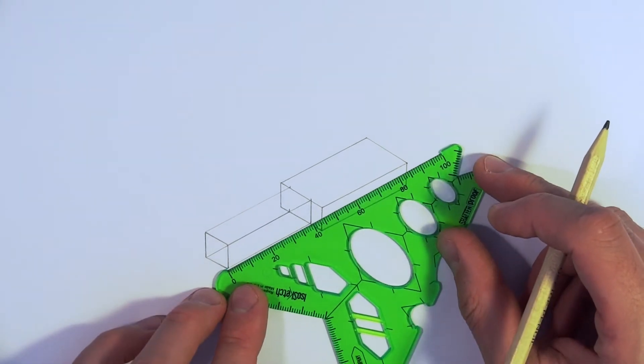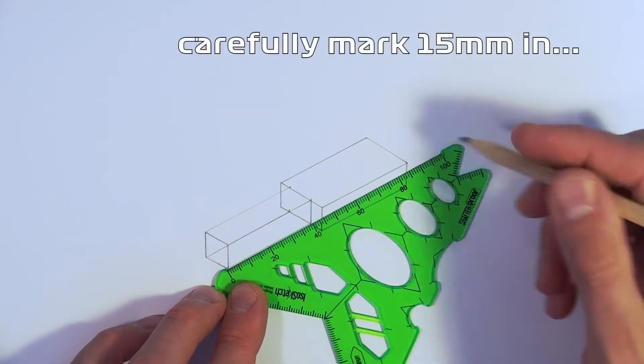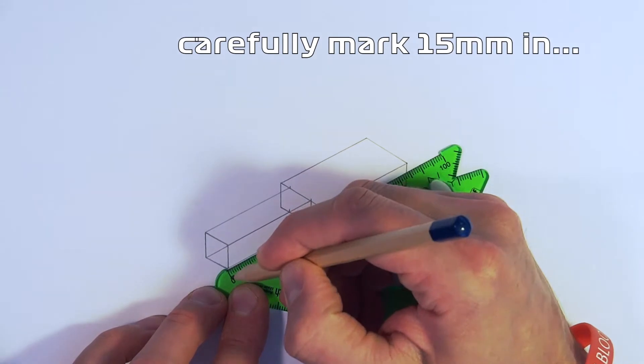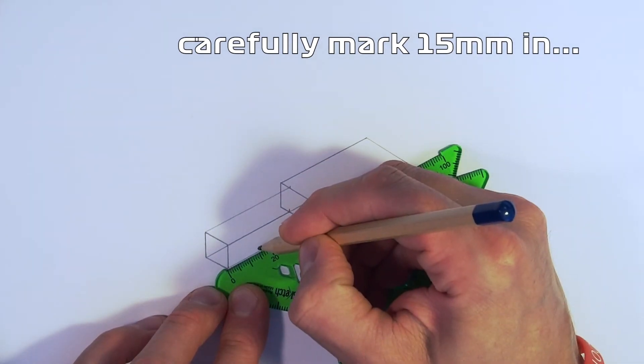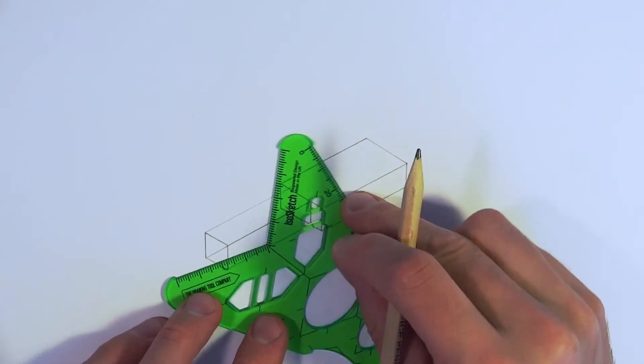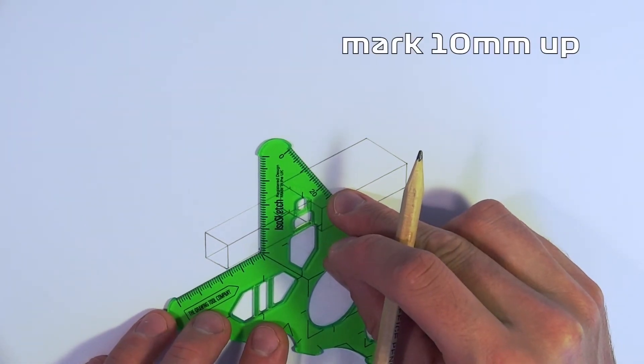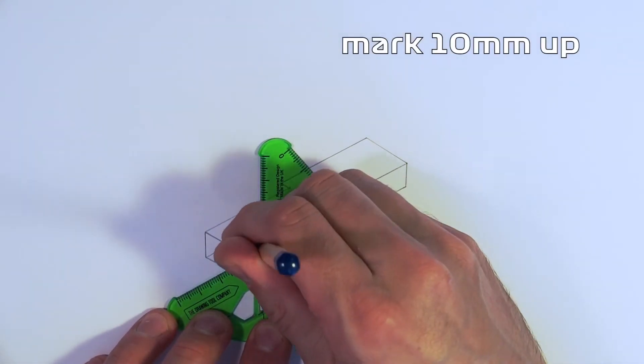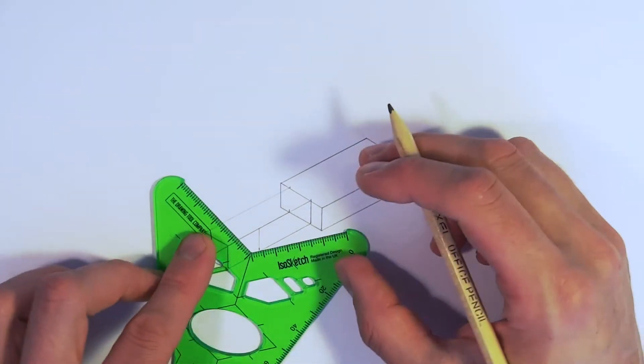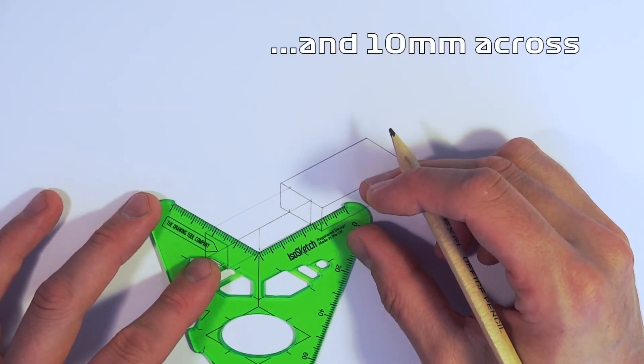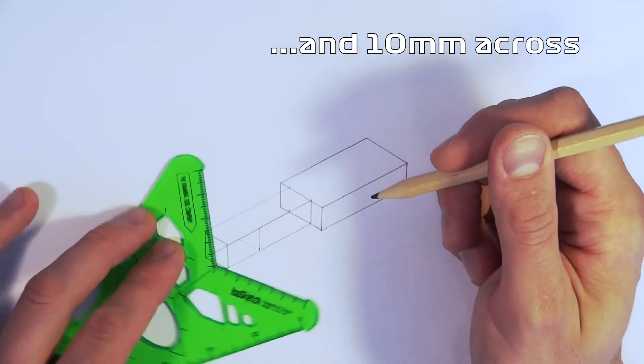So the first thing to do is just line the ruler up so that zero is right at the start of the shape and just measure in to where 15 millimeters comes and make a little dot. So 15 millimeters in, and then we're going to use the ruler again, lining up the tool so it's parallel with our drawing and marking a line 10 millimeters across and now 10 millimeters up.